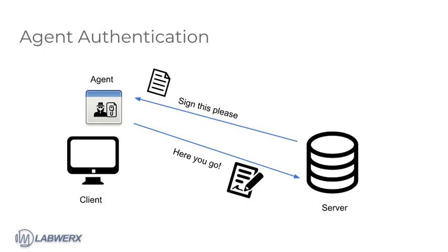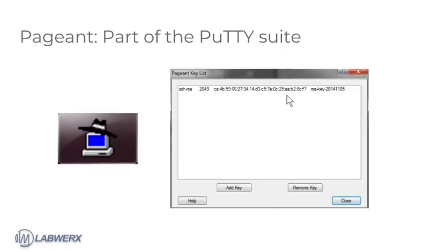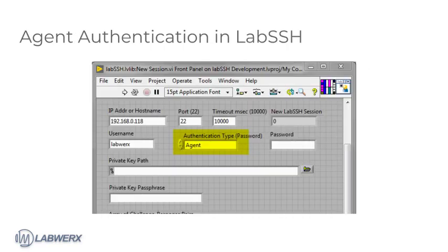In agent authentication, we defer authentication to an agent, which is just a piece of software running on your system that already has access to your private key files. This agent performs the authentication, not LabSSH. The most common agent is Pageant, which is included with the PuTTY suite. To authenticate using an agent in LabSSH, select the agent option in the authentication type choice control — the private key file path is not needed, as it is delegated to the agent. You should have your agent running and loaded with your private keys before you attempt to authenticate.